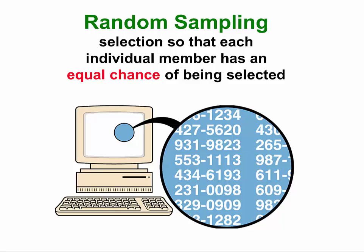Random sampling is sampling done in such a way that every member of the population has an equal chance of being selected as any other member of the population. For example, using a computer to generate telephone numbers or social security numbers, or putting all the names in a hat and drawing out a name, are examples of random sampling.